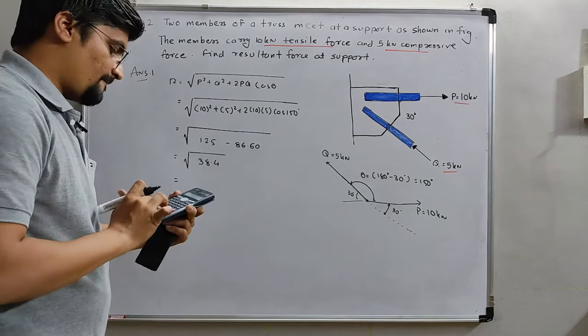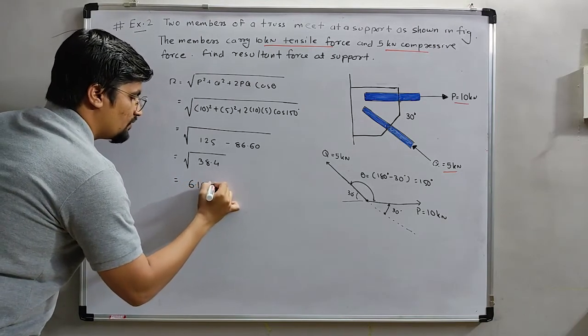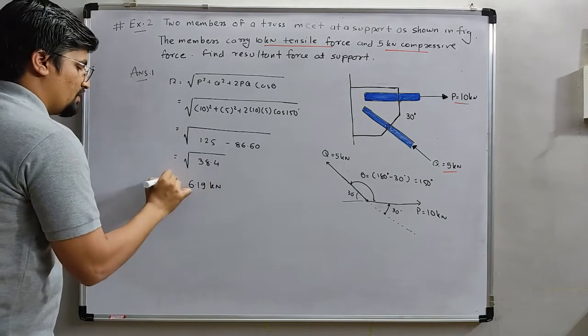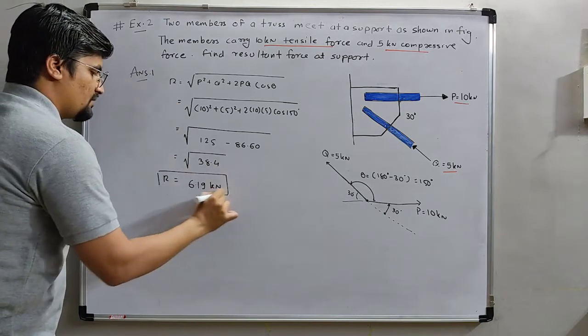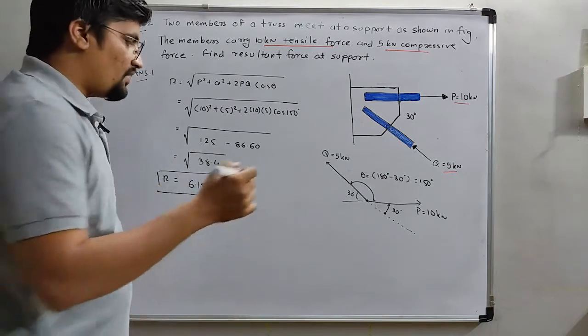Under root answer is 38.4. So the answer will be 6.19 kN. Our resultant will be 6.19. Now we need to find alpha.